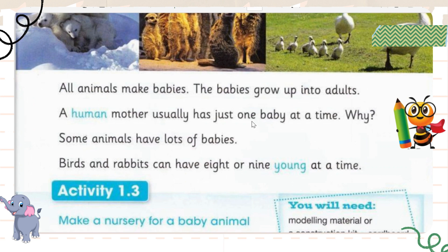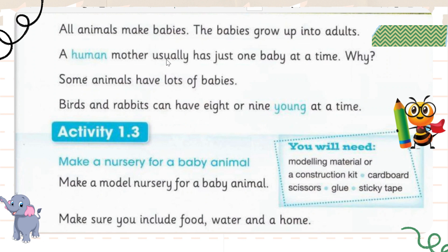A human mother usually has just one baby at a time. Some animals have lots of babies — birds and rabbits can have eight or nine young at a time. We use the word 'young' here because there are many in number. The reason birds and rabbits can carry eight or nine young at a time is because they are very small animals. Young also means similar to babies.